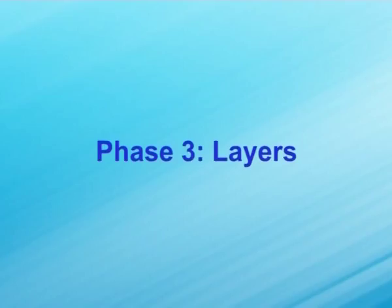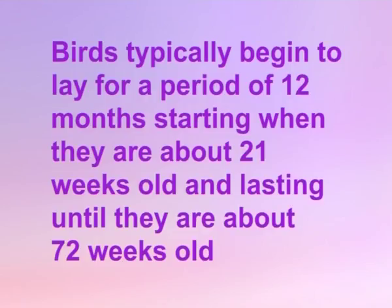Phase 3 — layers: growers are transferred from the grower house to the layer house when they are 18 weeks old, to prepare for the laying cycle. Birds typically begin to lay for a period of 12 months, starting when they are about 21 weeks old and lasting until they are about 72 weeks old.